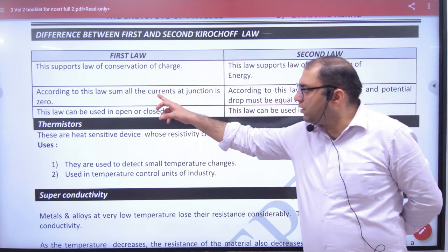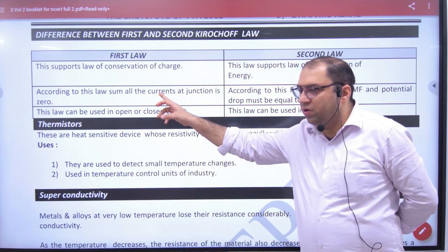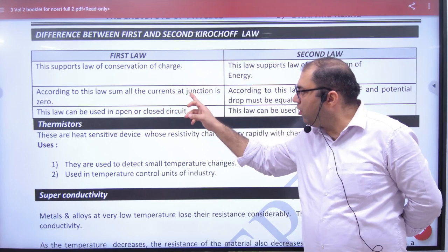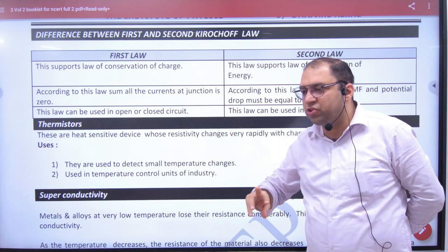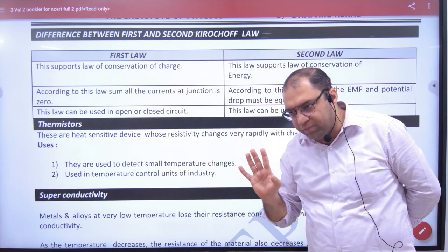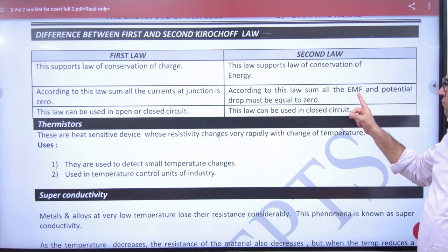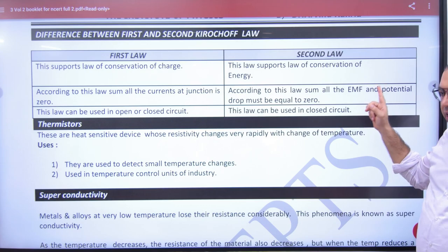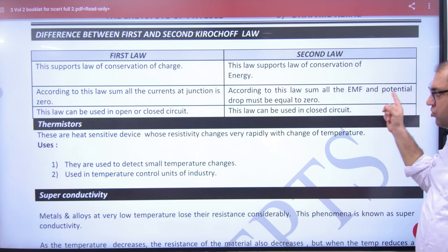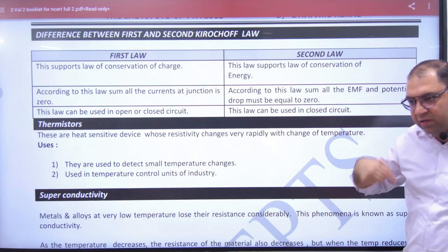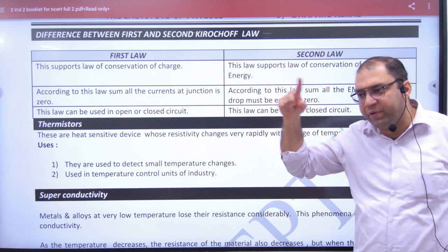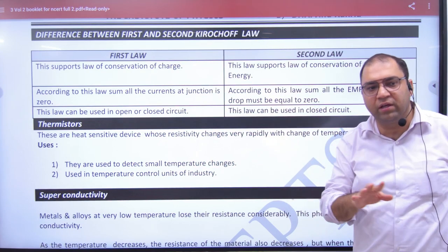According to the first law, the sum of all currents at a junction is zero. In the second law, the sum of all EMF and potential differences in a closed loop is also zero.